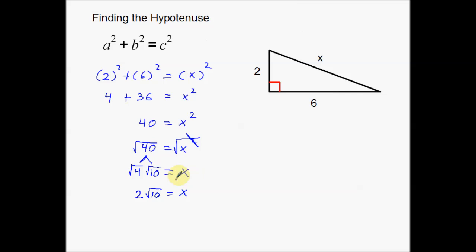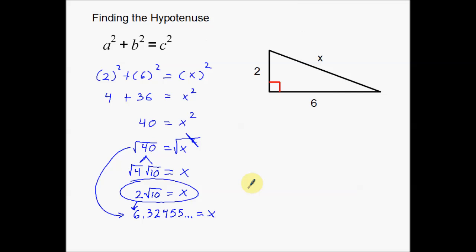That's the process of finding the hypotenuse. You can also write this as a decimal, and that's what students usually do — it depends on what the problem asks. You can plug the square root of 40 into your calculator, or plug in 2 times the square root of 10, and you get approximately 6.3245, which equals x. Sometimes problems ask you to write your answer in simplest radical form; sometimes they ask you to round to the nearest tenth or hundredth.